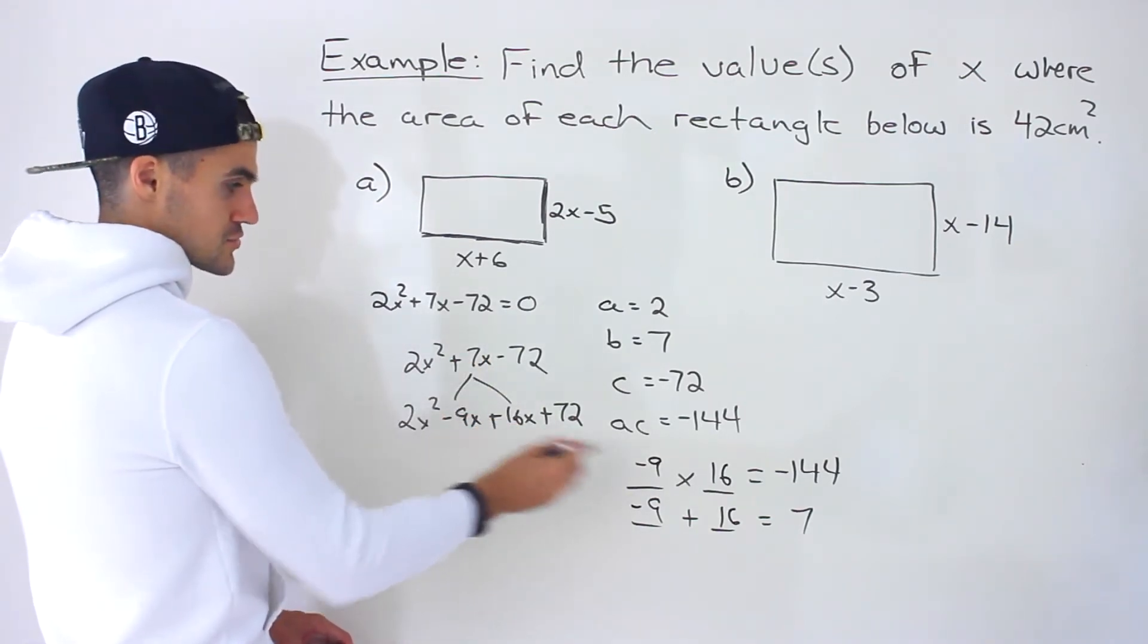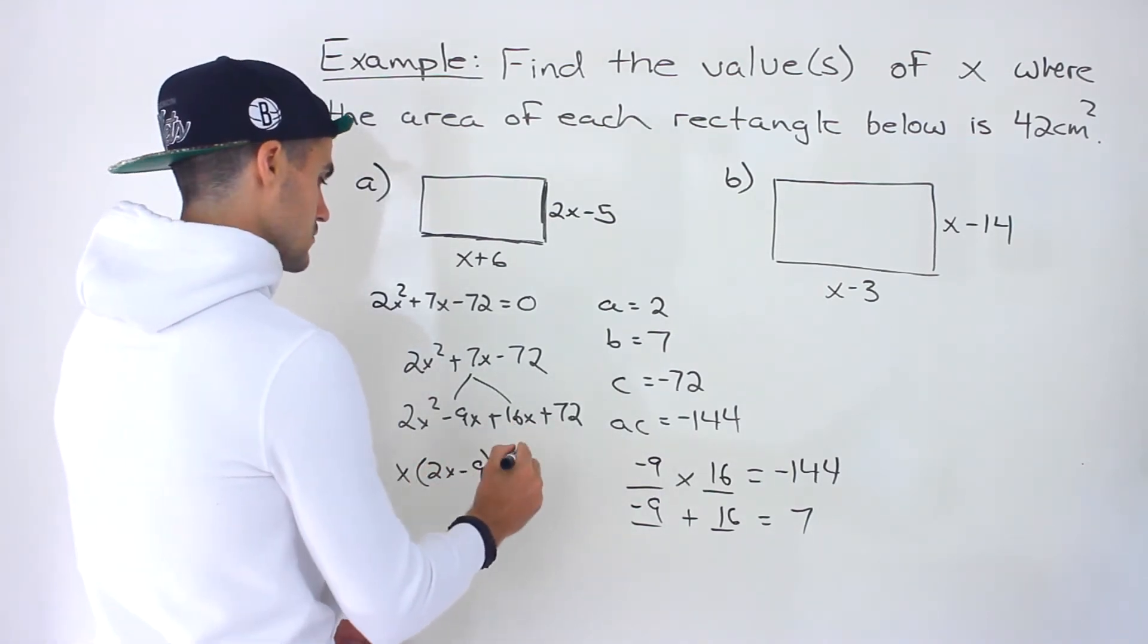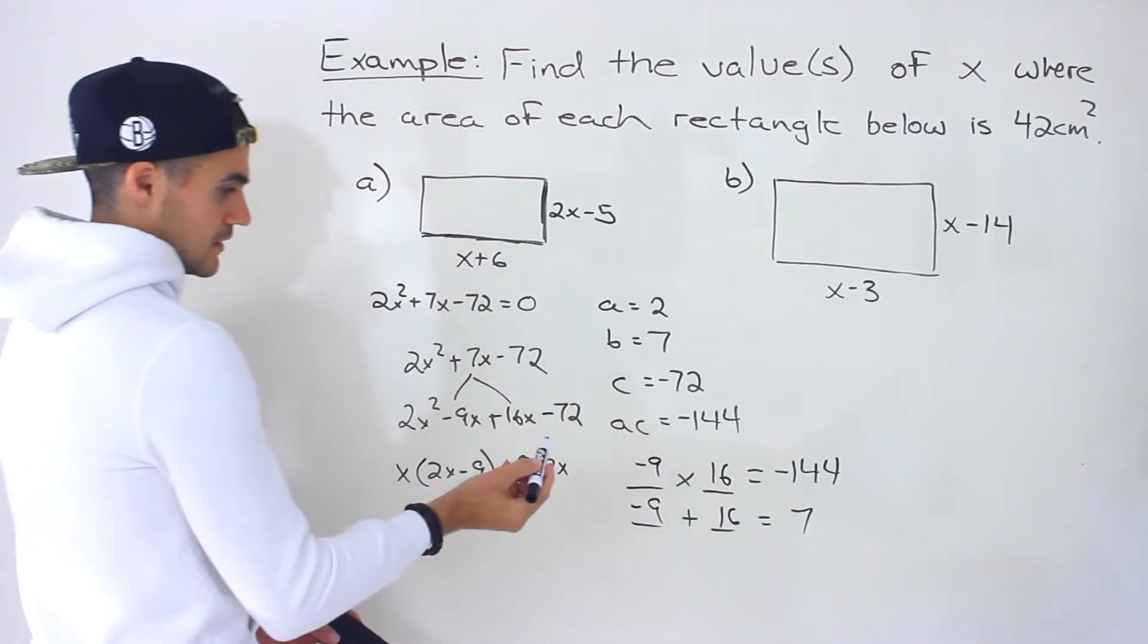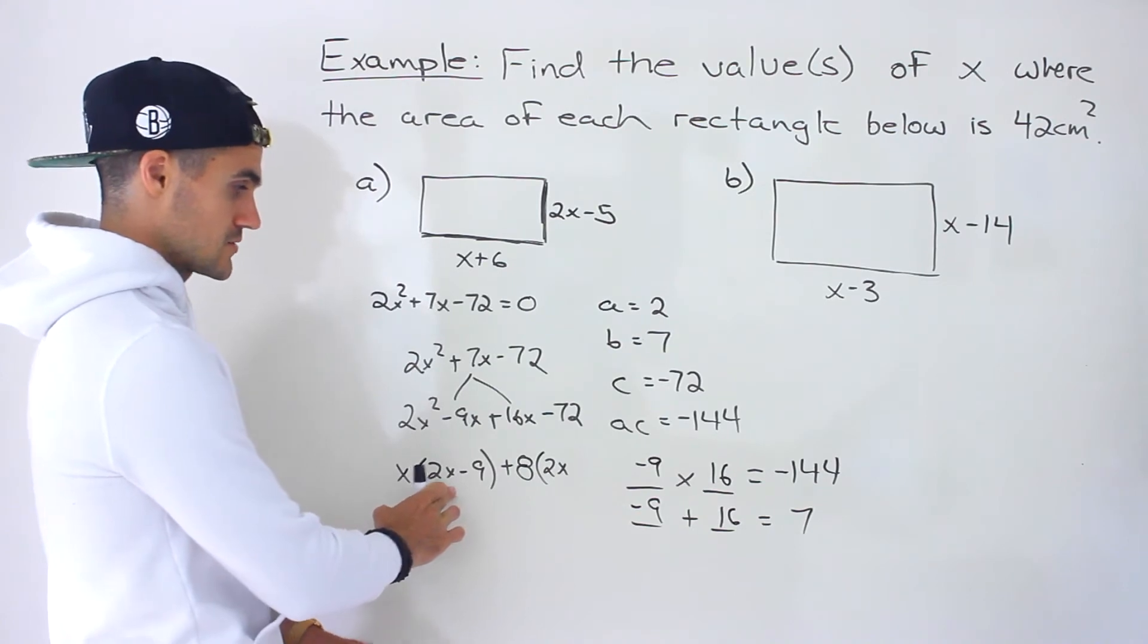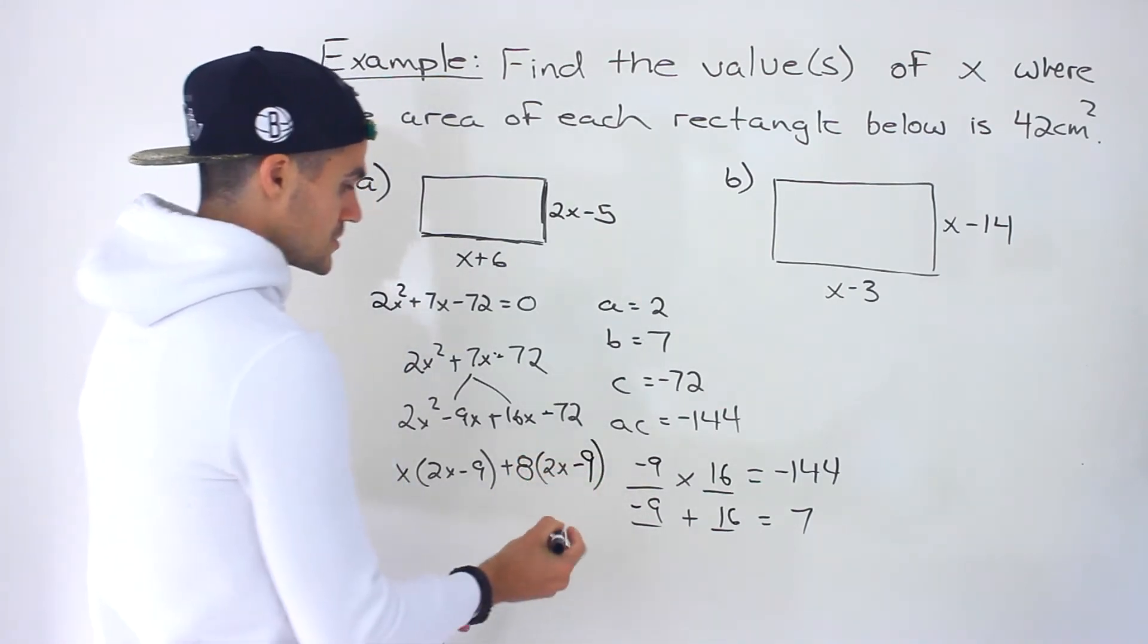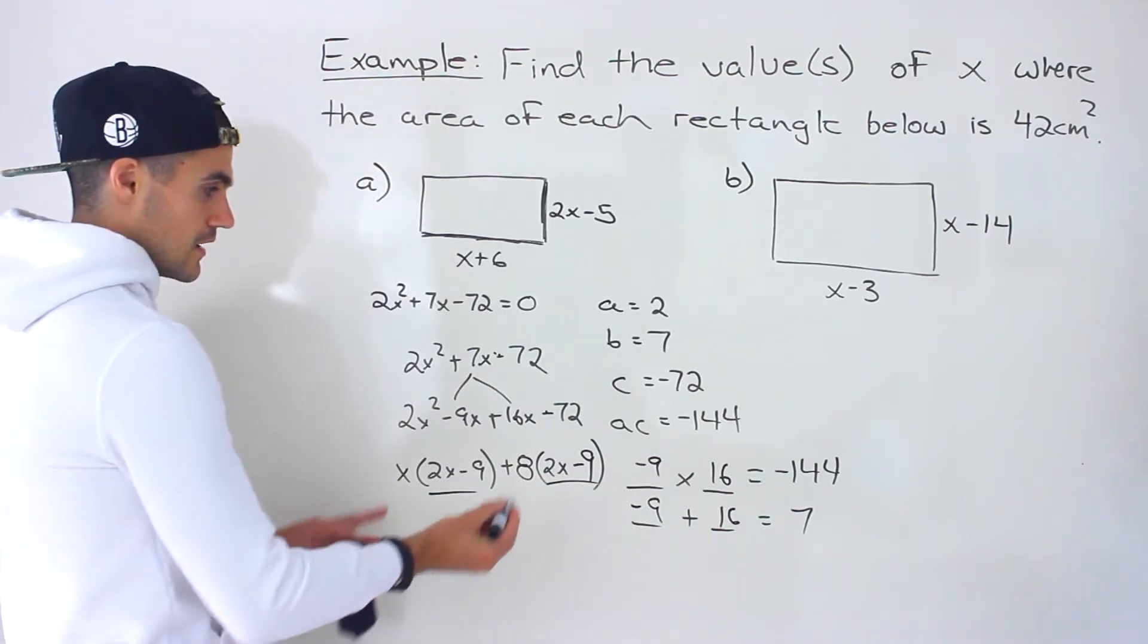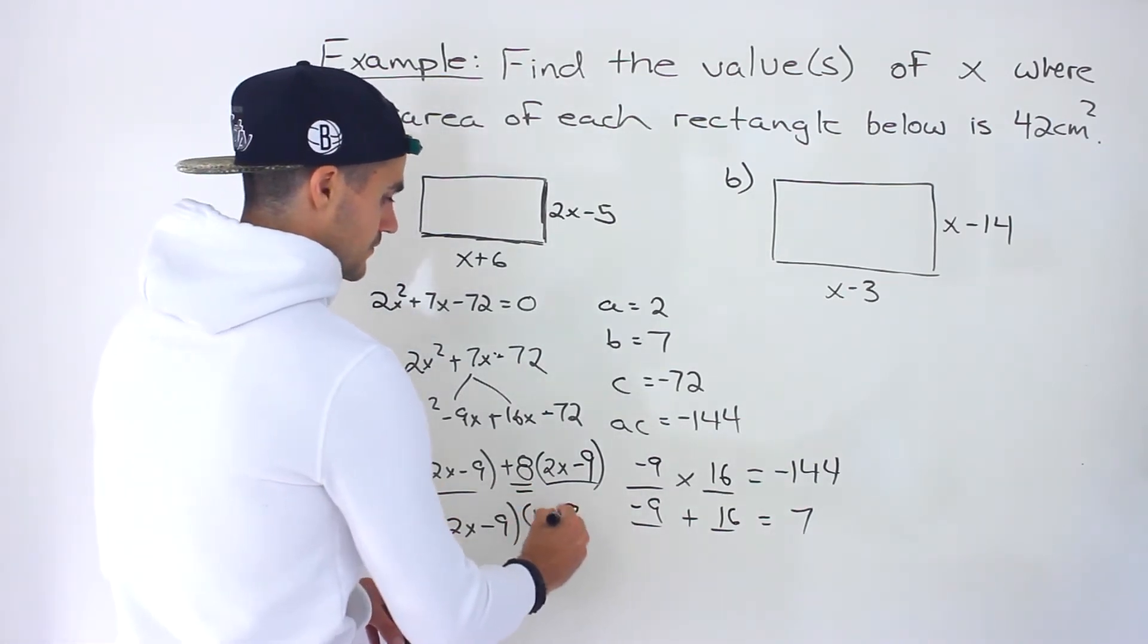So we'll have 2x squared minus 9x plus 16x minus 72. So we're decomposing that middle term into those two values we found. From these two we could take out an x. So we'd be left with 2x minus 9. And then from these two we can take out an 8. And we'd be left with 2x. Sorry this is minus 72 right here. My bad. And I caught that because I realized that this bracket was going to be different than this bracket over here. So I was like what was going on? Then I realized that I carried over a different sign. These two brackets should always be the same. So it's a nice check within the process that was a real time example where I made a mistake but I caught it because I knew that these brackets should be the same. Anyway so we take that bracket out 2x minus 9 and then we're left with x plus 8. Like that.